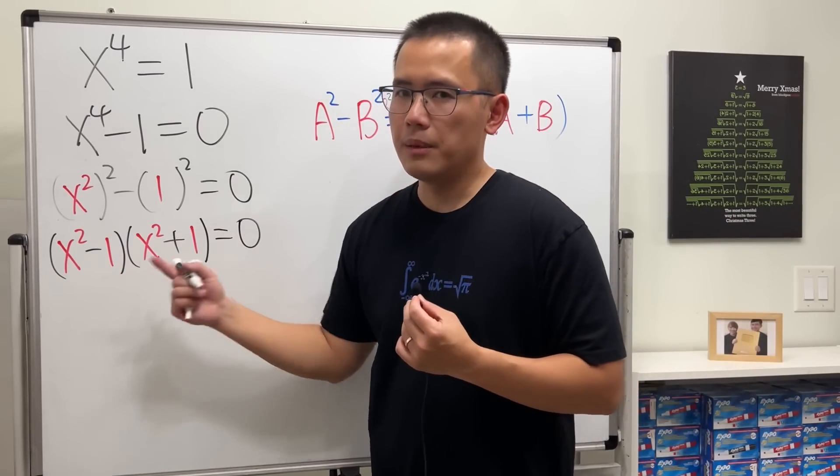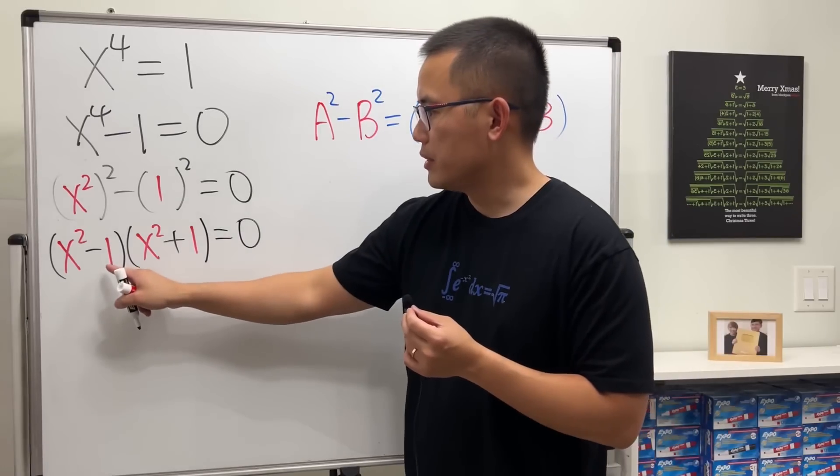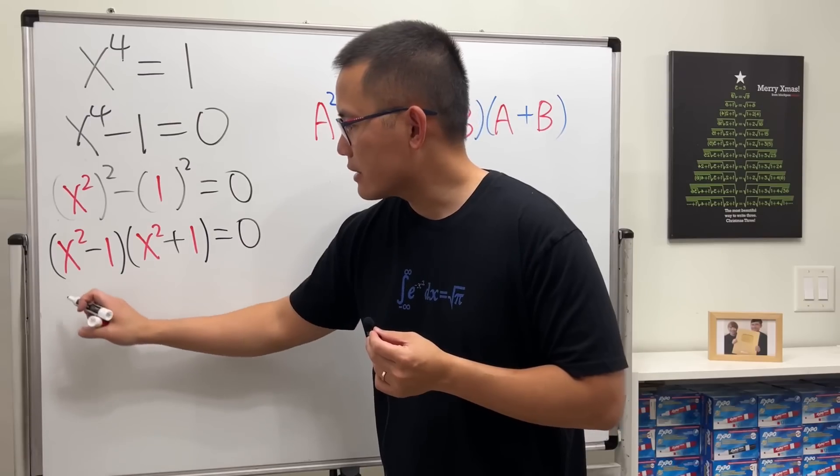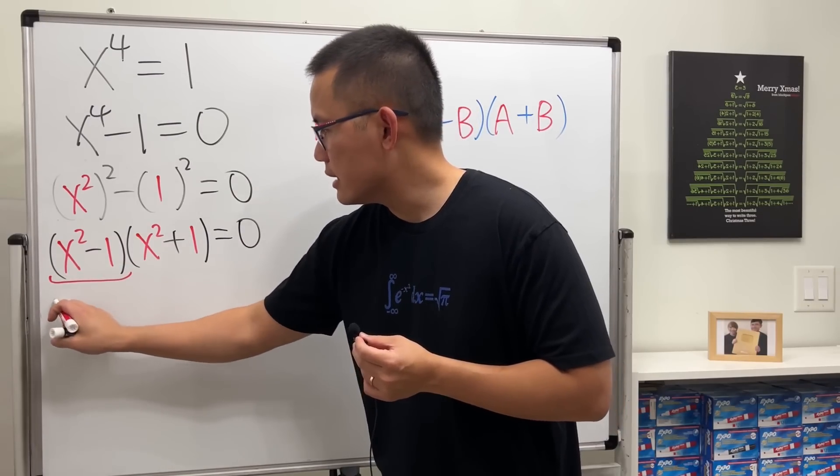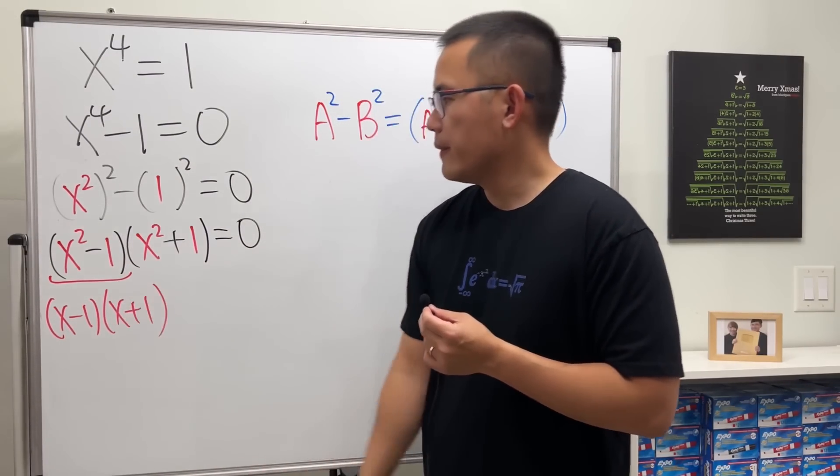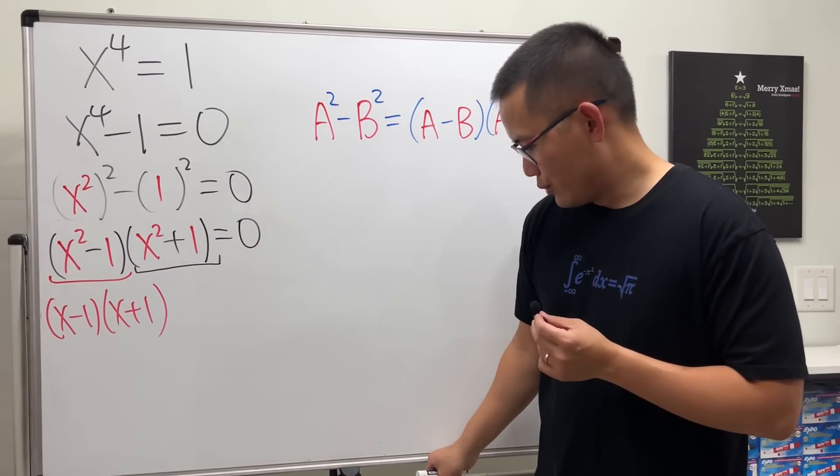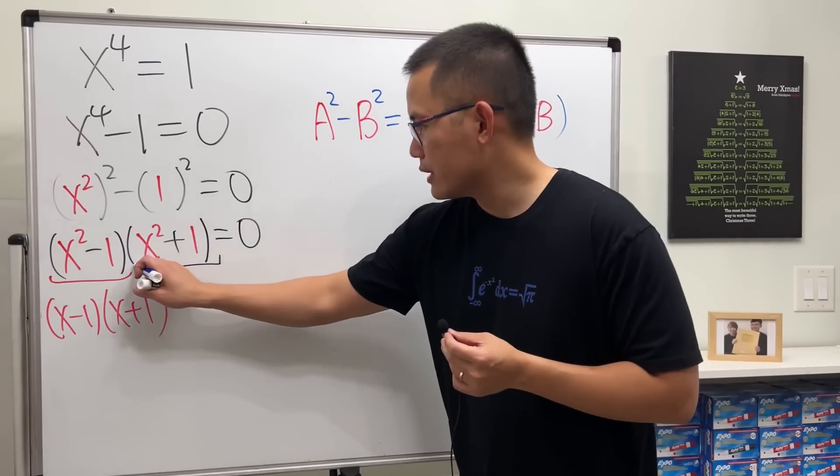Now, this right here can be factored again by using the difference of two square formula, because the 1 is the same as 1 squared. So we can factor this as x minus 1 times x plus 1. And now you might be wondering, how can we factor this? Well, I'm going to do that on the side for you guys, for this part.